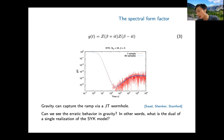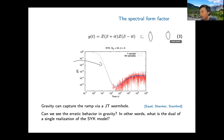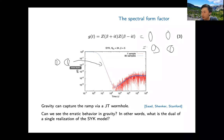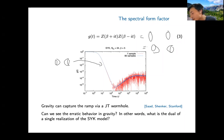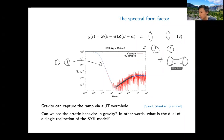We know SYK can be described at low energy by JT gravity. The dip here is basically the black hole contribution—the two disk geometries representing two black holes explain the dip. The ramp, as pointed out by Saad, Shenker, and Stanford, can also be understood in JT gravity: it is the contribution of the wormhole, specifically the connected wormhole contribution, which gives exactly the ramp with the right coefficient.